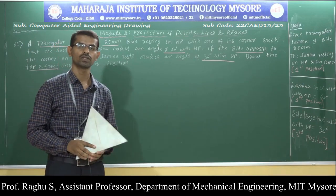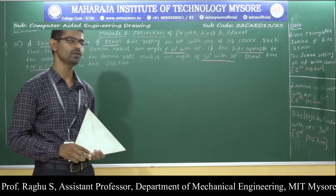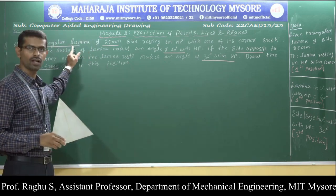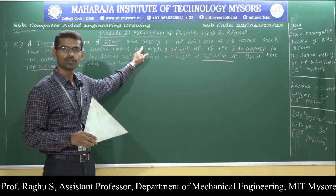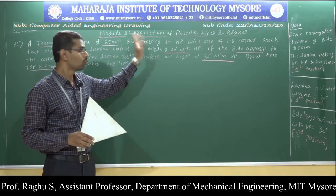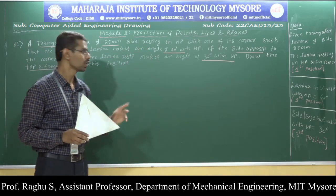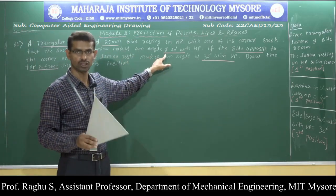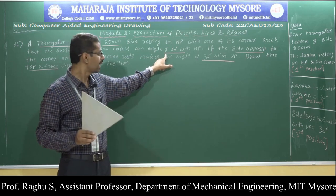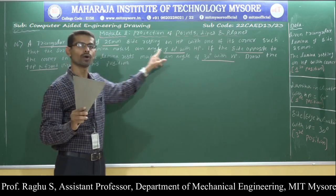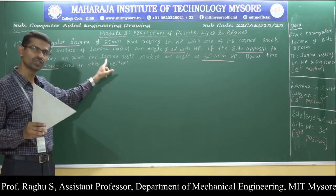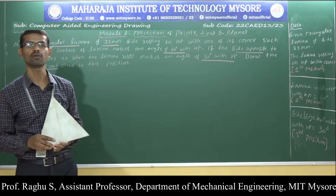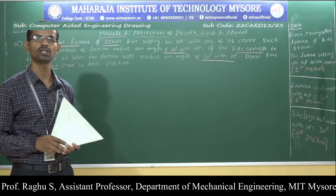Welcome back. We are discussing problems on projection of planes. The next problem: a triangular lamina of side 25 mm resting on HP with one of its corners, such that the surface of the lamina makes an angle of 60 degrees with HP, and the side opposite to the corner on which it rests makes an angle of 30 degrees with VP. Draw the front view and top view in this position.